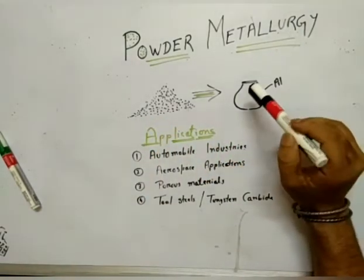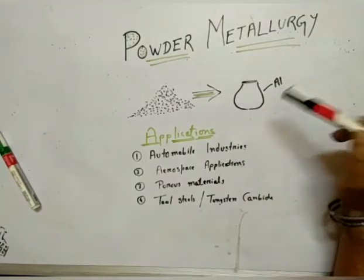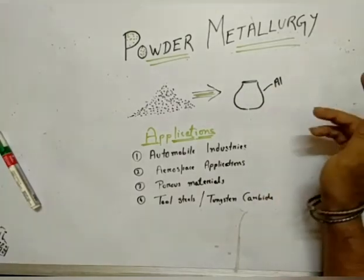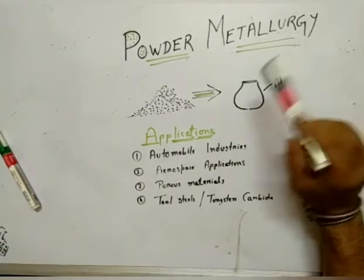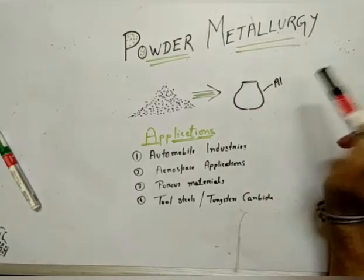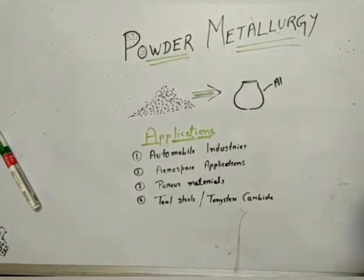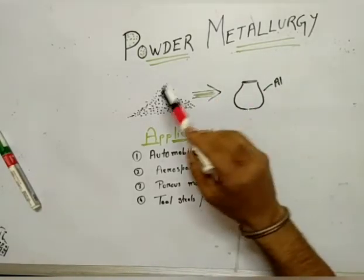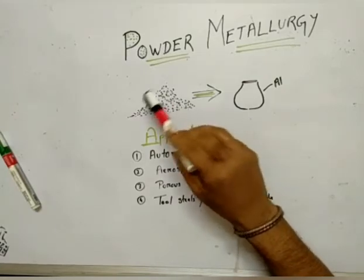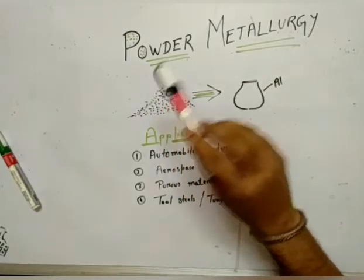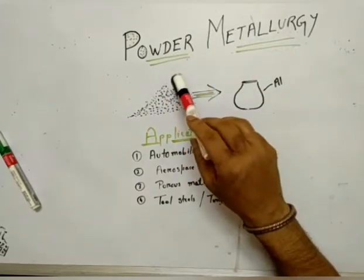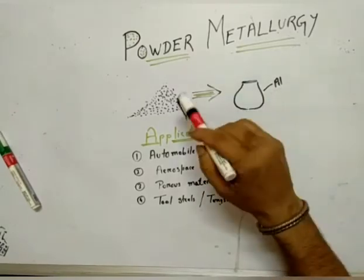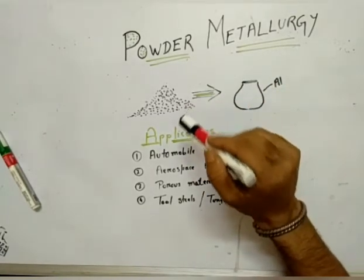In metal casting, we take molten aluminum, create a mold of the desired shape, pour the molten aluminum into that mold, and finally get the casting. But powder metallurgy is somewhat different. Here, to get this shape, we first have to get aluminum powders — metallic powders. So powder metallurgy is all about converting metallic powders into a solid workpiece.